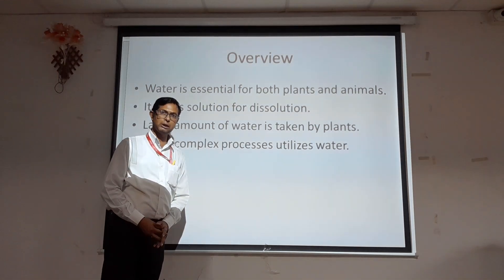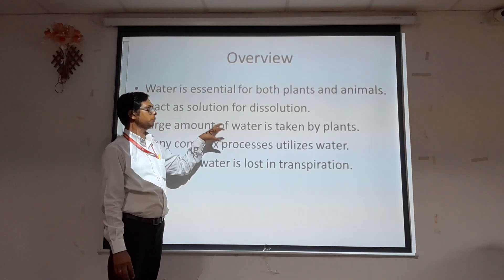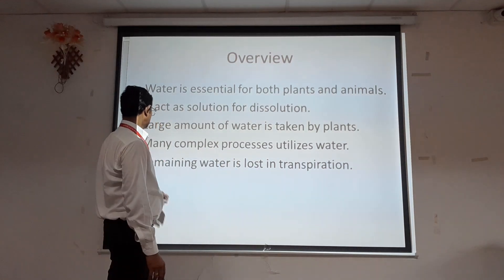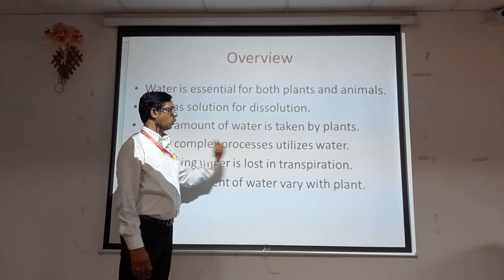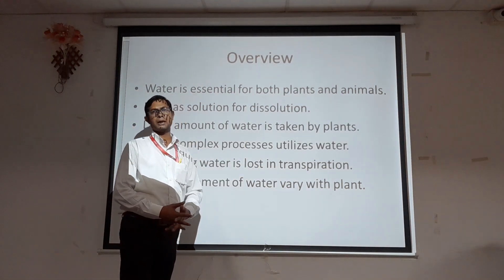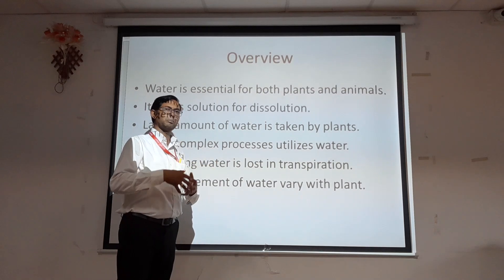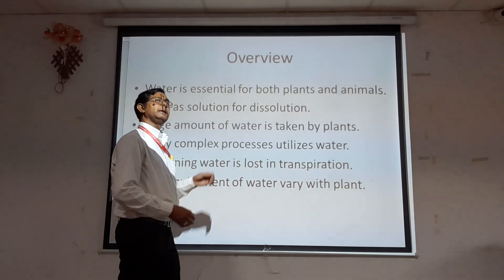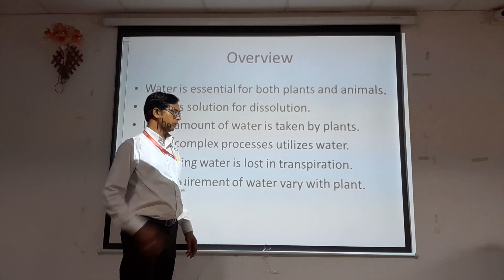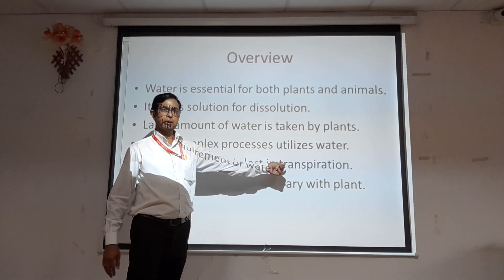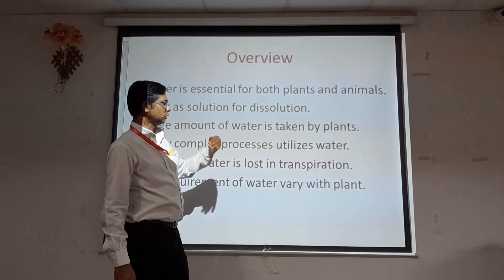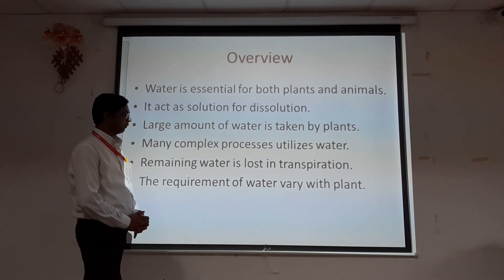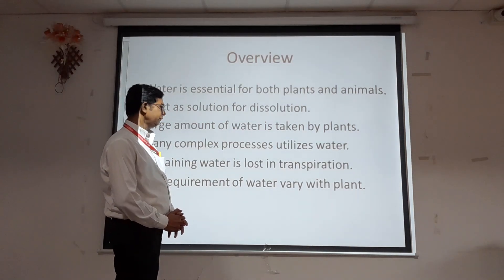Many complex processes utilize water. The water absorbed by the plant is used in different types of complex processes, and the remaining water is lost through the process of transpiration. This large amount of water taken up by the plant — whatever is required is utilized for different processes, and the remaining water is given out through the process known as transpiration. The requirement of water varies with the plant.